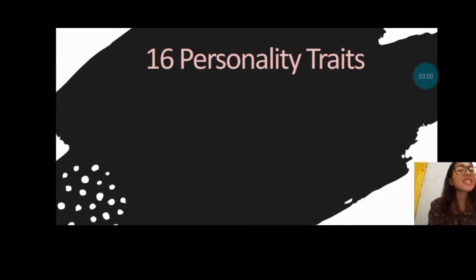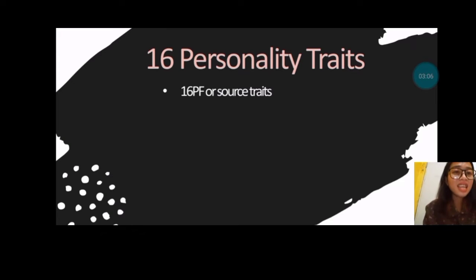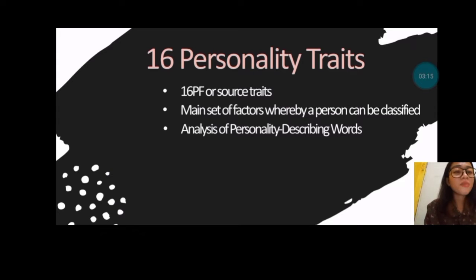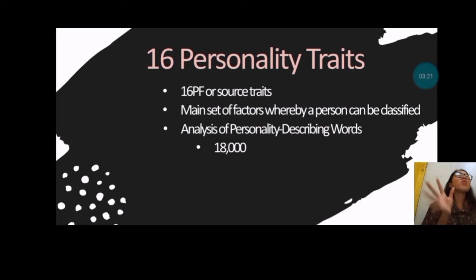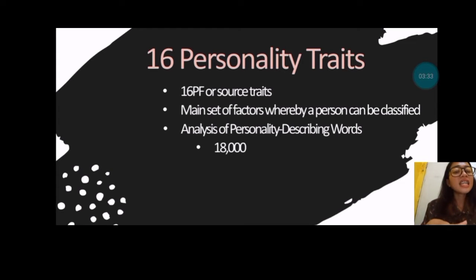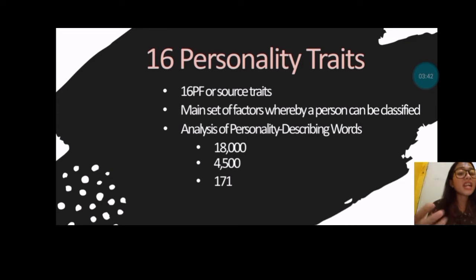So what are these 16 personality traits? Basically, these are our source traits — the main set of factors whereby a person can be classified — through analysis of personality-describing words. He started with 18,000 words, following Allport's approach, then listed down 4,500 words which he converted into 171 items or 171 questions.